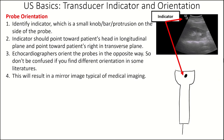Now we can talk about transducer indicator and probe orientation — this sets a standard on how we interpret the image. The first step is to identify the indicator, a small knob or bar protrusion on the side of the probe. That indicator appears in two places: on the probe, and on the screen on the opposite side. You want that indicator on the probe pointed toward the patient's head in a longitudinal or sagittal plane, or pointed toward the patient's right in a transverse or axial plane. This sets the standard so we see a mirror image, just like in CT scans and X-rays.